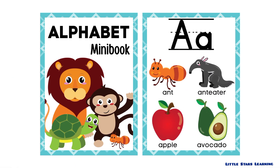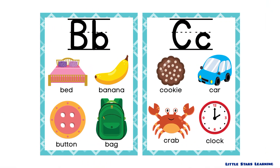Alphabet mini book. A is for aunt, theater, apple, and avocado. B is for bad, banana, button, and bag. C is for cookie, car, crab, and clock.